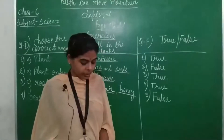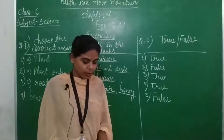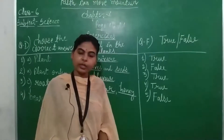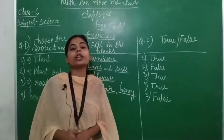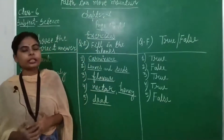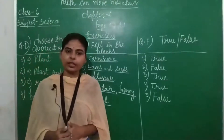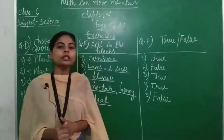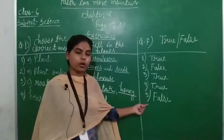Fourth column: the energy we get from the food we eat is stored as muscular energy. The energy gained from food items is stored in the muscles as muscular energy — write true. Fifth column: we get more variety of food from animals than plants — No, write false.